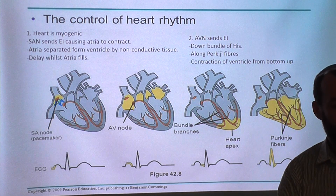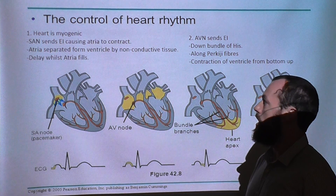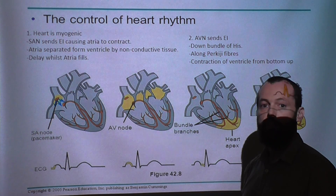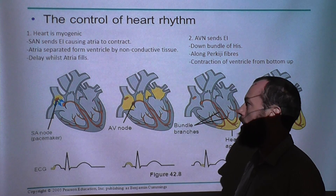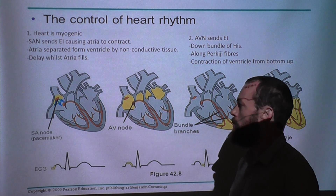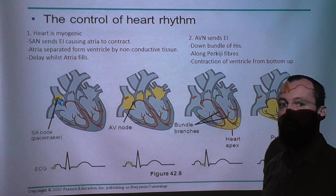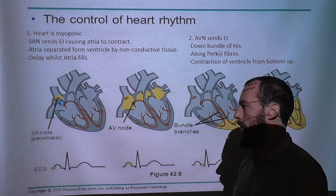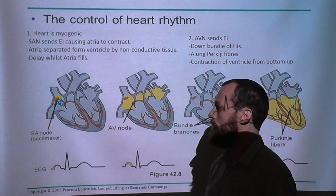We turn now to how the heart actually initiates a heartbeat. The heart is myogenic — this means it's a pacemaker; it will beat on its own. The SAN, the sinoatrial node, is an electrical node located in the atria. It sends an electrical impulse which causes the atria to contract, thereby pushing blood down into the ventricle. The atria is separated from the ventricle via a layer of non-conductive tissue, as we do not want the ventricle to contract due to electrical activity in the atria. There is then a short delay whilst the ventricle fills with blood from the atria.